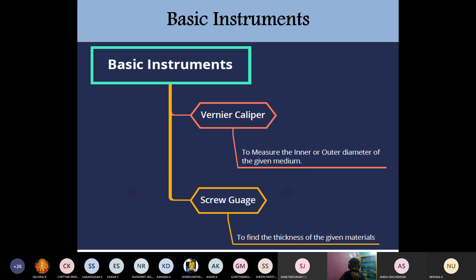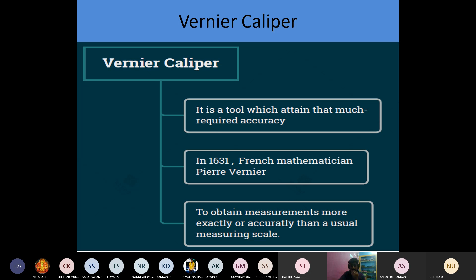By using the screw gauge, we measure the thickness of the given material. For today's class, we are going to study these basic instruments — the vernier caliper and the screw gauge.